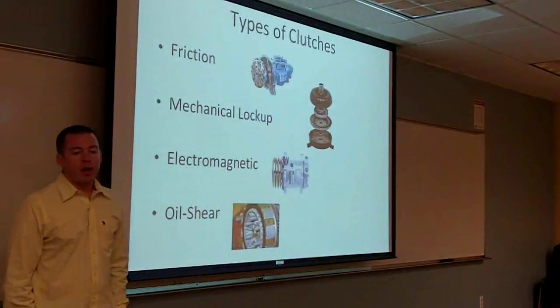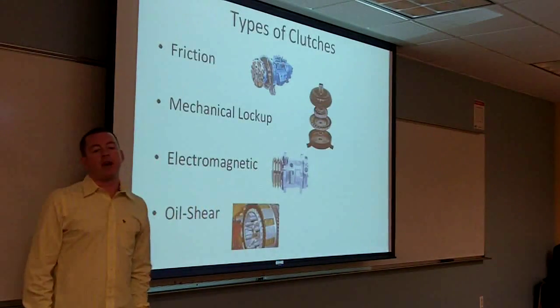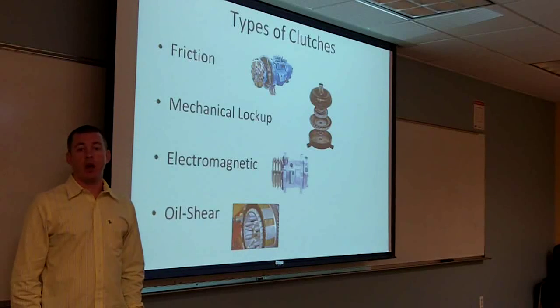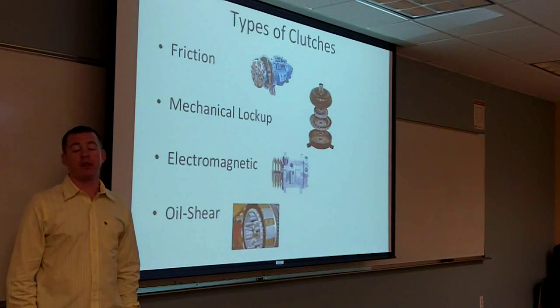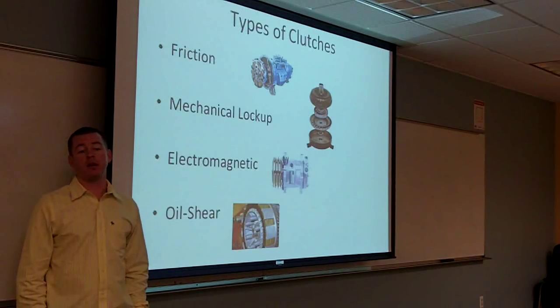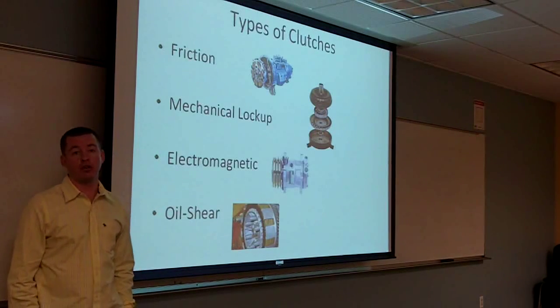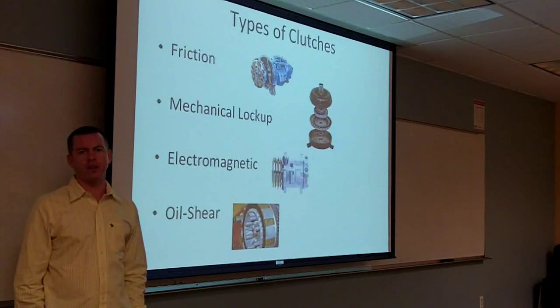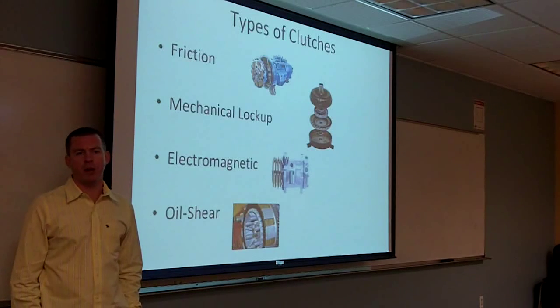There are four main types of clutches: the friction clutch, the mechanical lock-up clutch, the electromagnetic clutch, and the oil shear clutch. All these clutches have many different applications and uses.